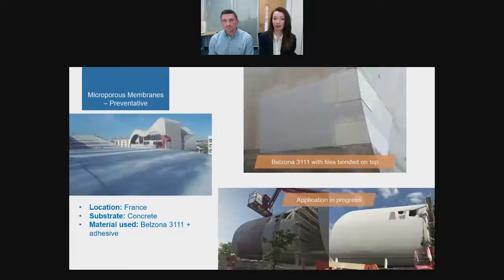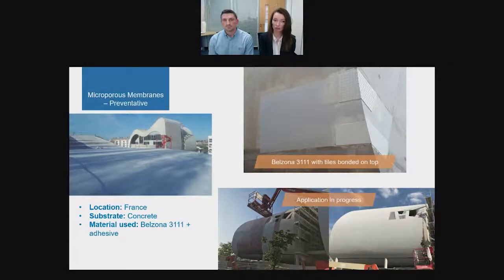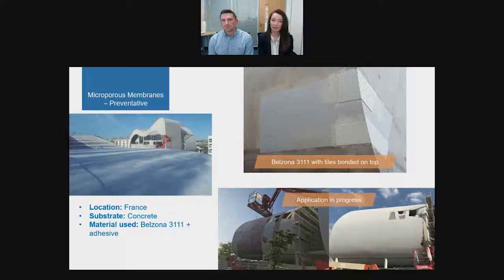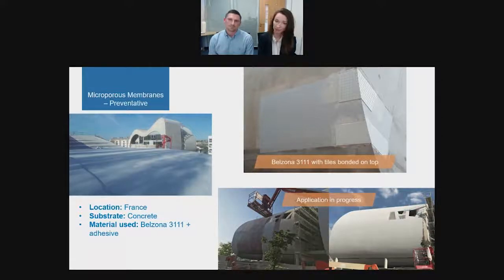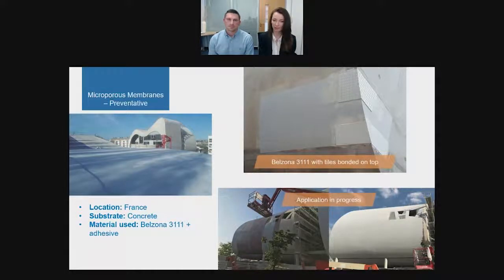This application took place in France at the beginning of the year. Unlike a typical repair, this time the material was required to protect a new build structure from any potential damage. They used Belzona 3111 on the roofs and walls of three curved buildings, and after that used an adhesive to bond white tiles onto the outside of the buildings. The final look was white tiles all over the buildings, but they were also waterproof and weatherproof thanks to the Belzona 3111 underneath.